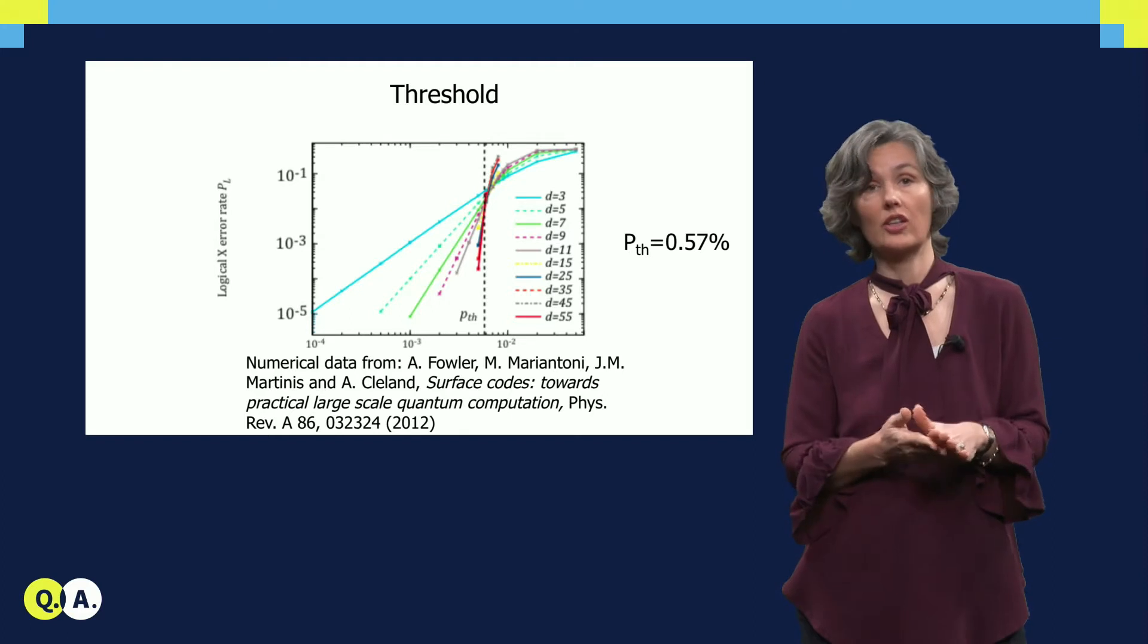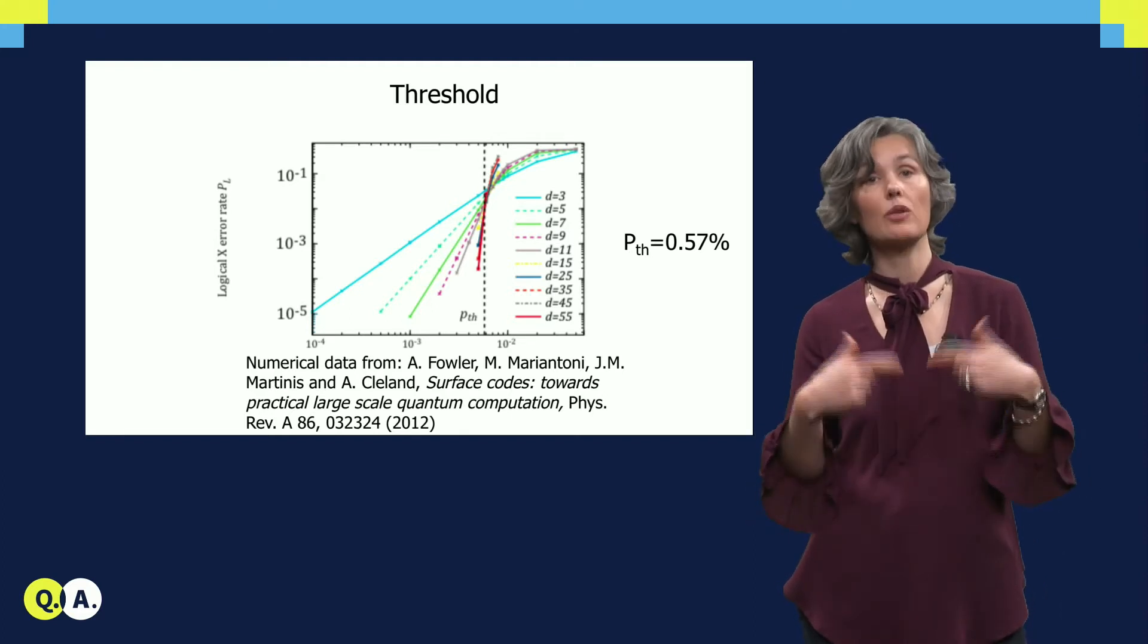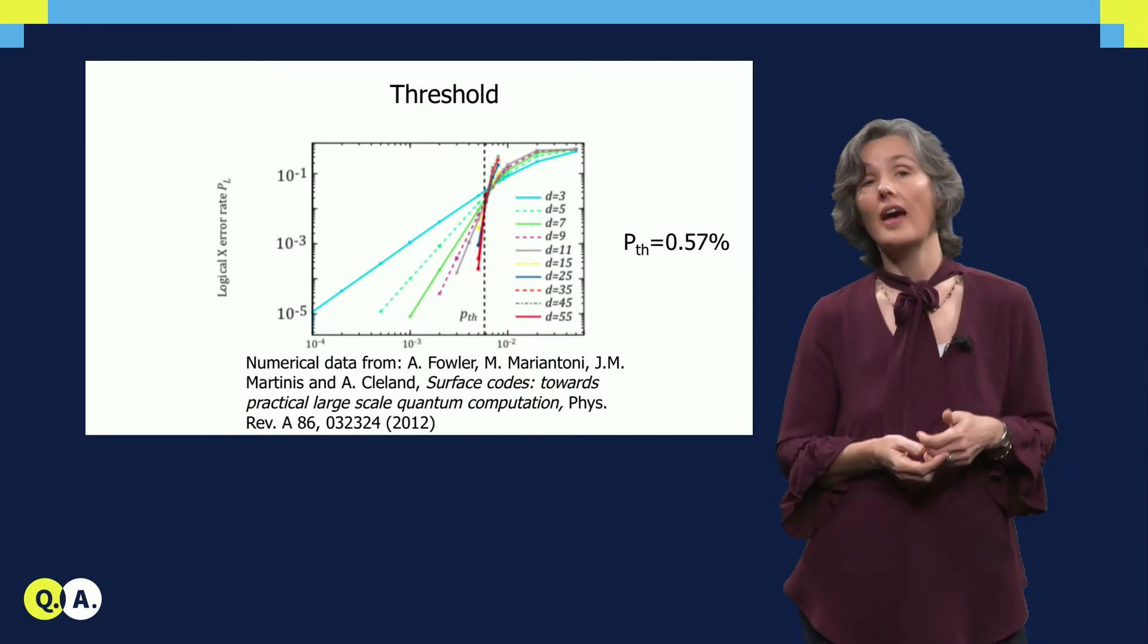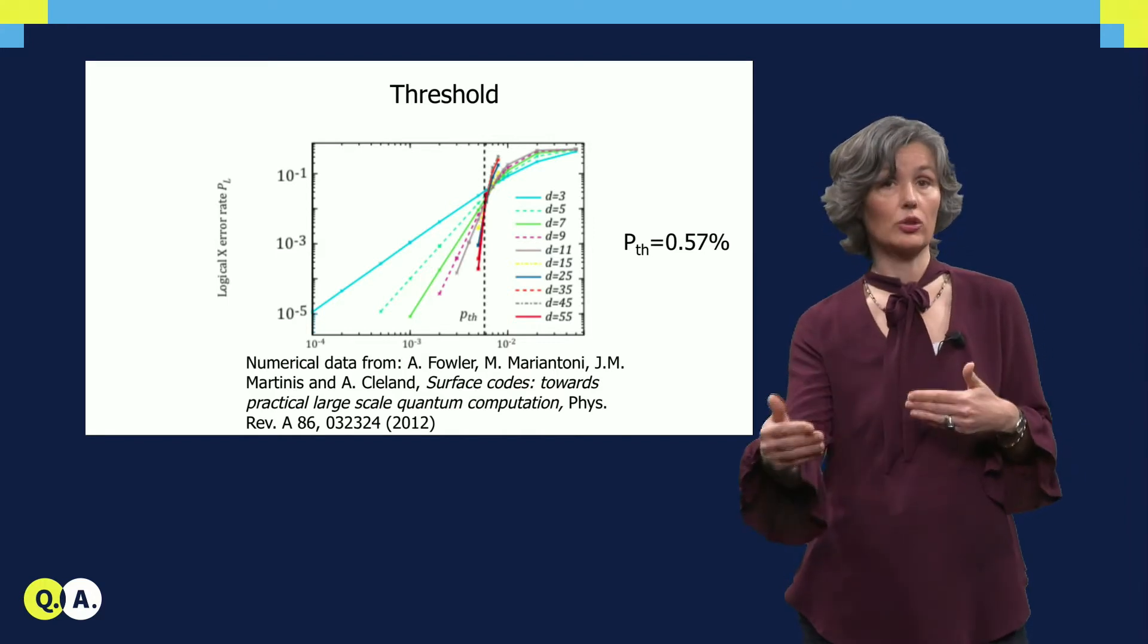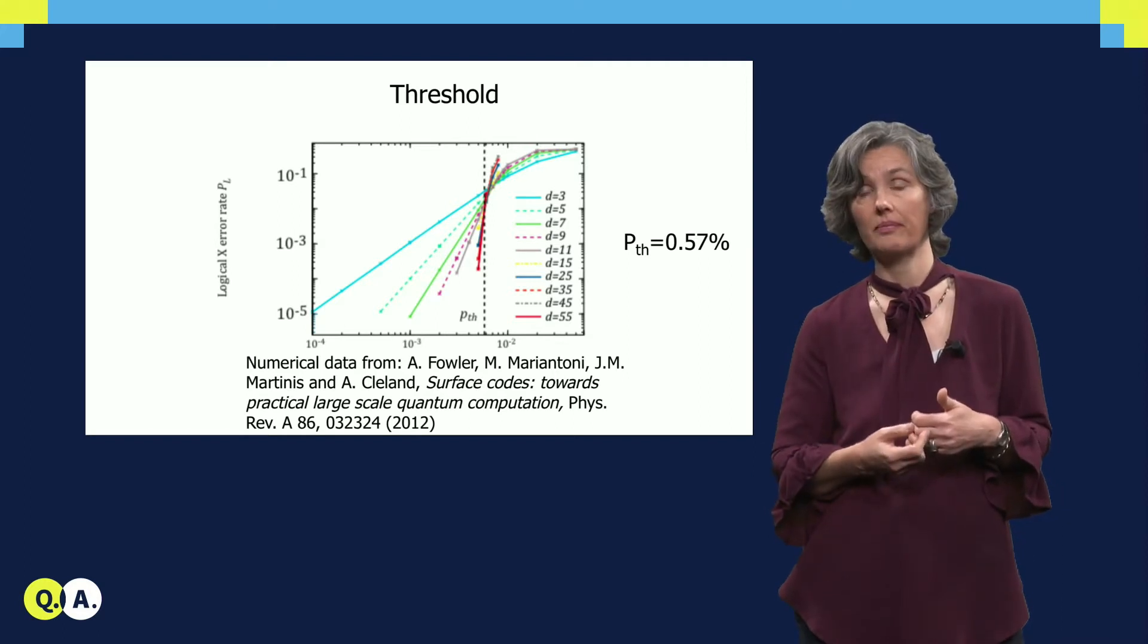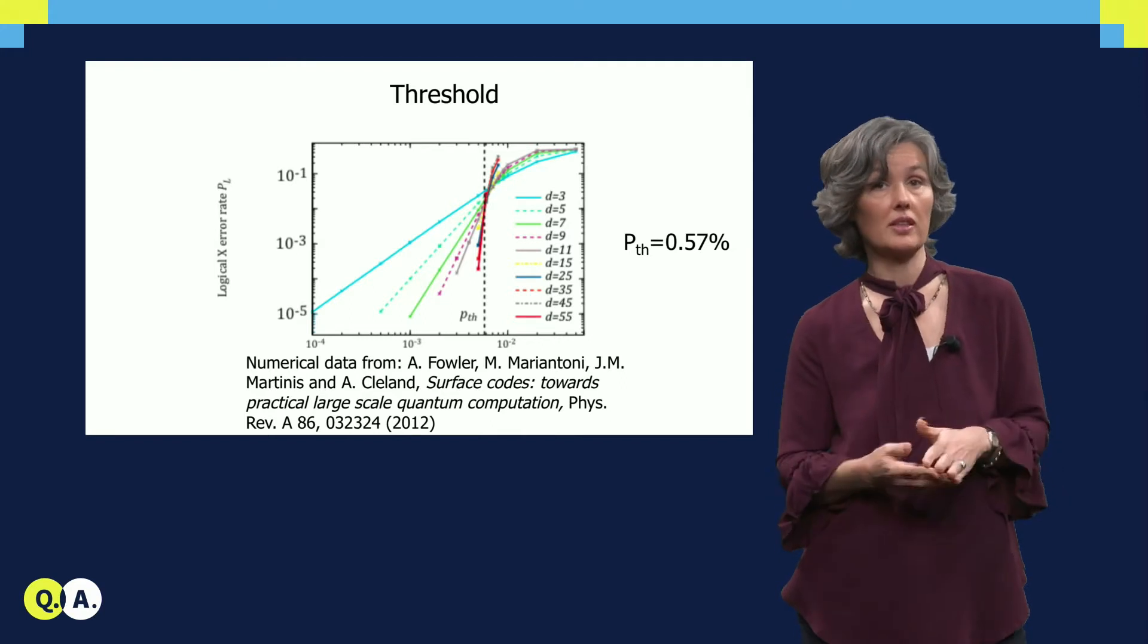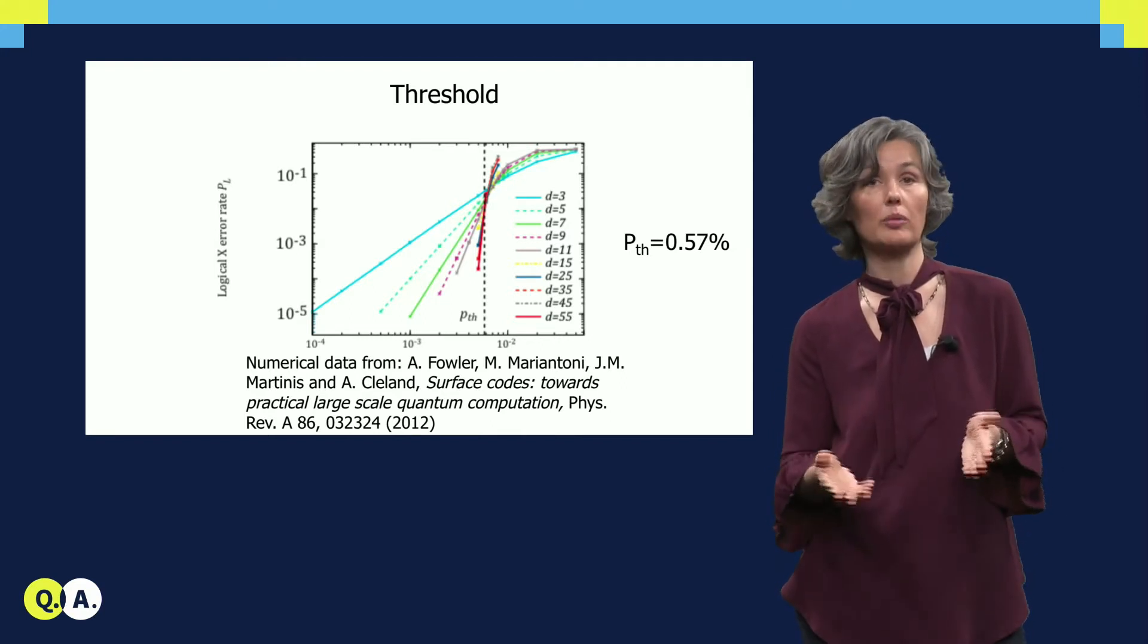The goal of preserving a qubit in time with surface code is now to apply many quantum error correction cycles and deduce from the parity check outcomes what errors have taken place. The logical failure probability of the logical qubit is determined by how well we do this.